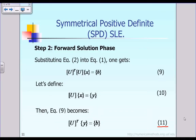Let me continue the discussion. As you remember from the previous slides, we are trying to solve the system equation that can be represented in matrix notation as Ax equal to b. For a given matrix A which is symmetric positive definite and the right-hand side vector b, we want to solve for the unknown vector x.